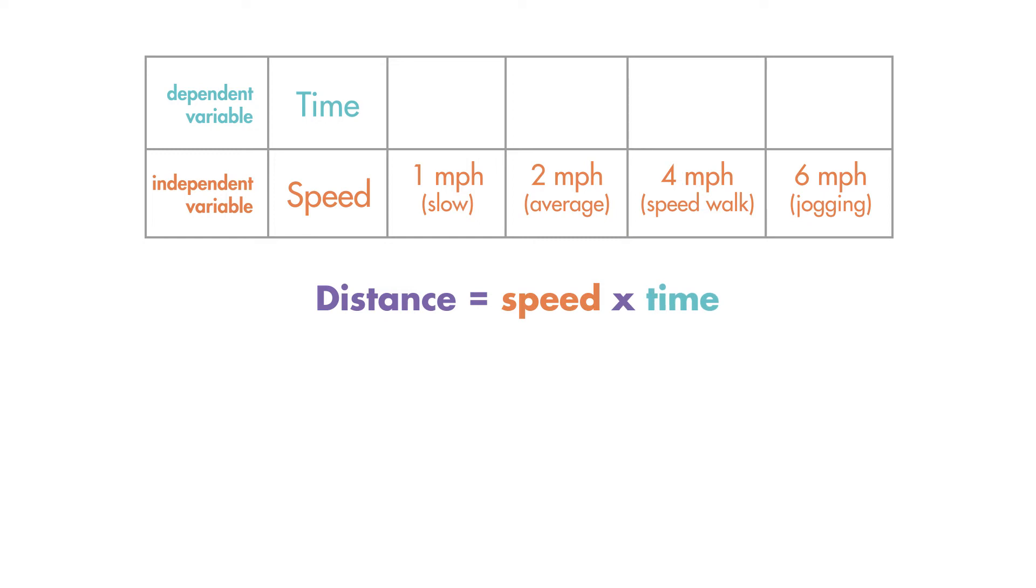Our distance is 6 miles. At 1 mile per hour, our equation is 6 is equal to 1 times t or 1t. So Alex's time at 1 mile per hour would be 6 hours.